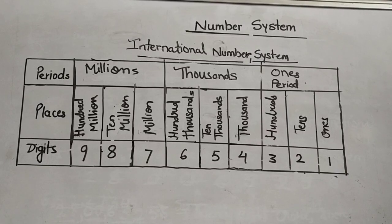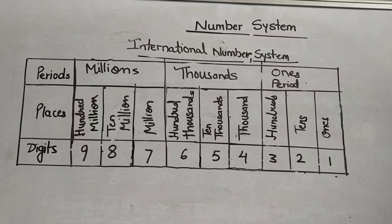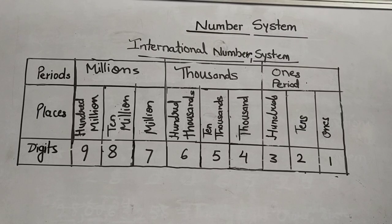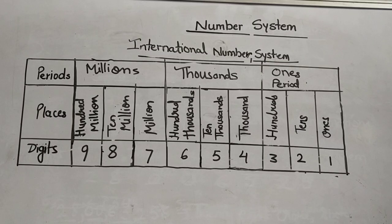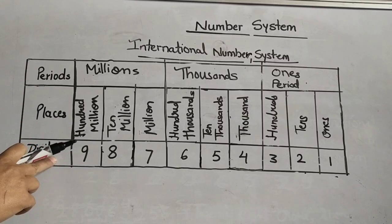Now let's learn about the international place value system or international number system. Like the Indian place value system, it also has periods, places, and digits.